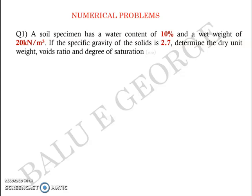Now we'll try to deal with the first numerical problem. Question number 1: A soil specimen has a water content of 10% and a wet weight of 20 kN per m³. If the specific gravity of the solids is 2.7, determine the dry unit weight, void ratio, and degree of saturation.